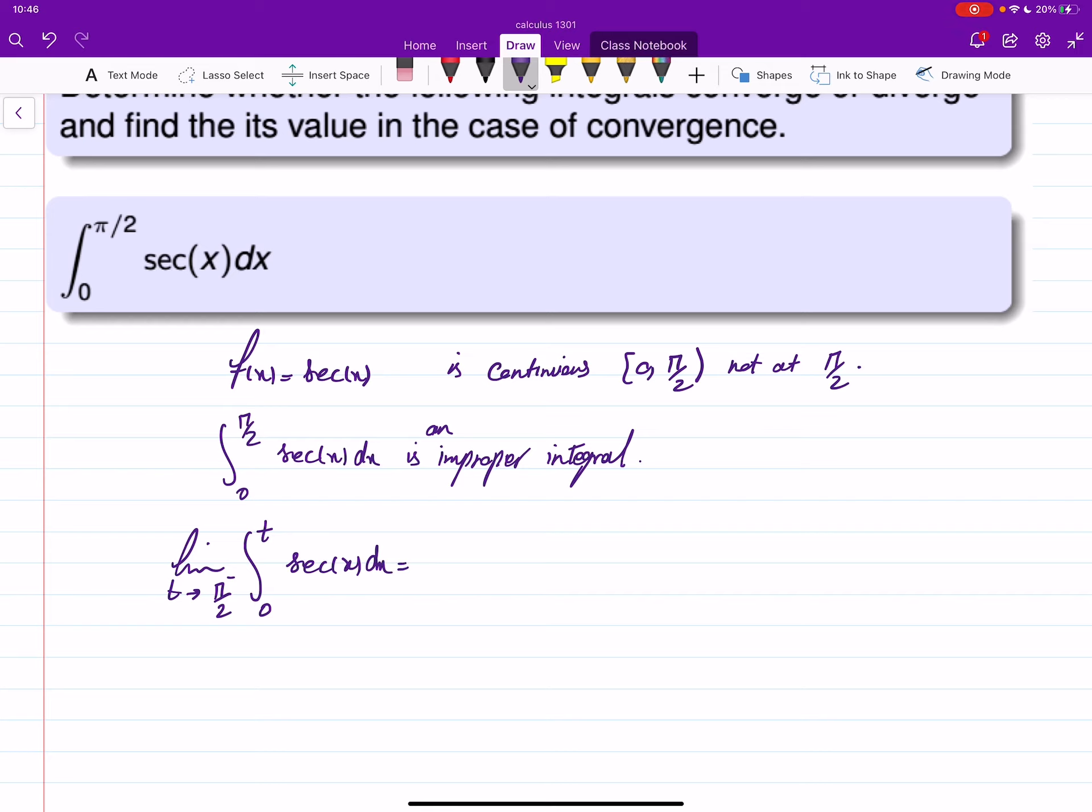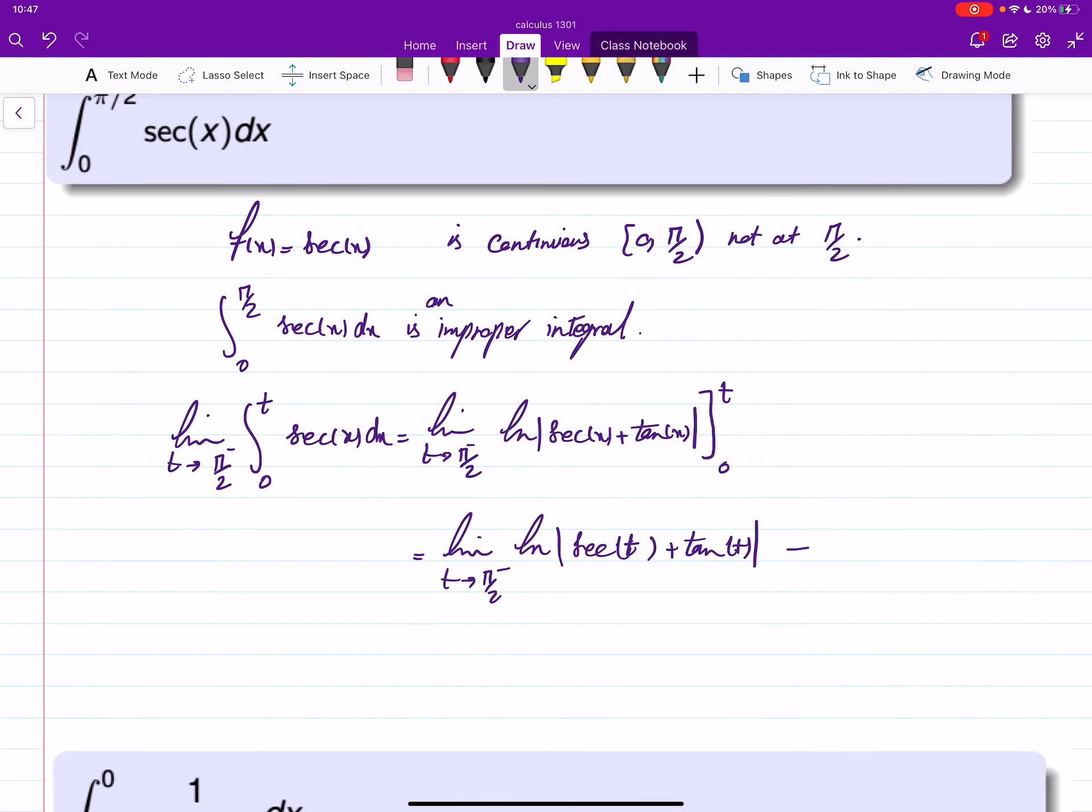We know that the antiderivative of secant is ln of secant x plus tan x, and we are going from zero to t. When we let t go to π/2 from the left, what we have here is basically when we plug in secant of t, secant of t plus tan of t, as t goes to π/2 from the left, minus when I plug in zero. Well, tan of zero is just zero, and secant is one, so this will be ln of one, which itself is zero.